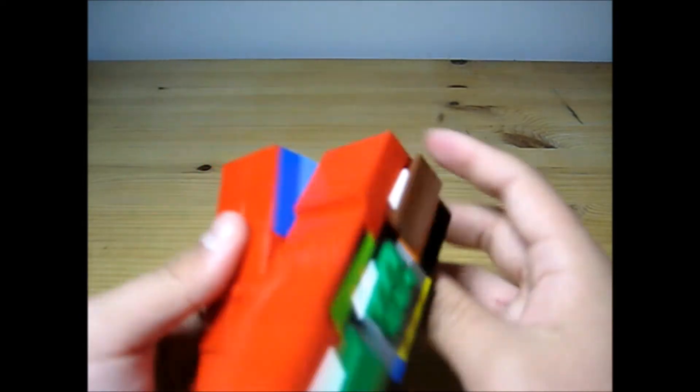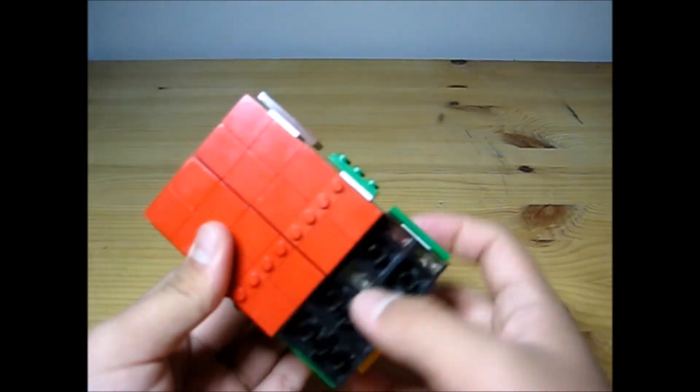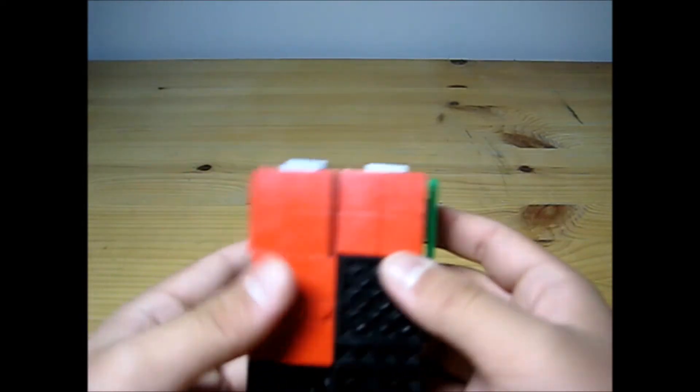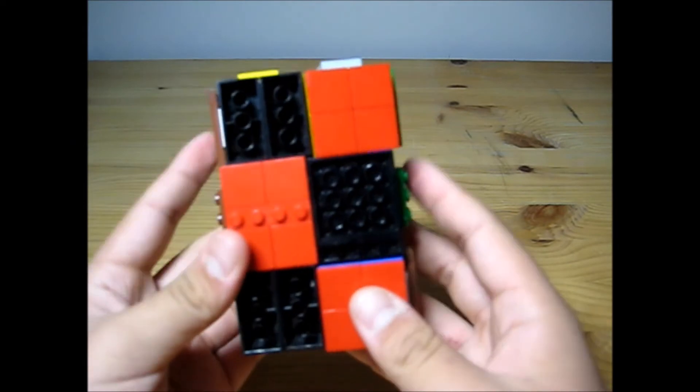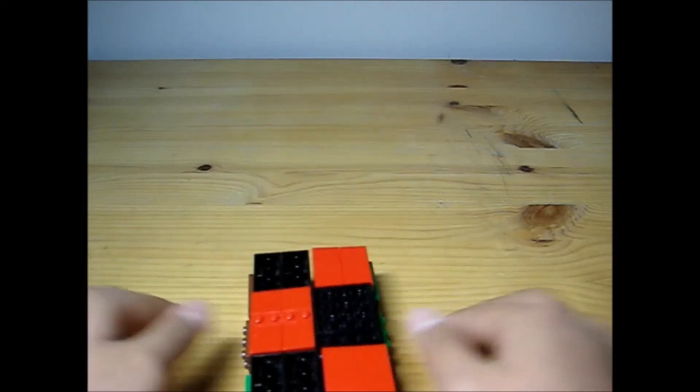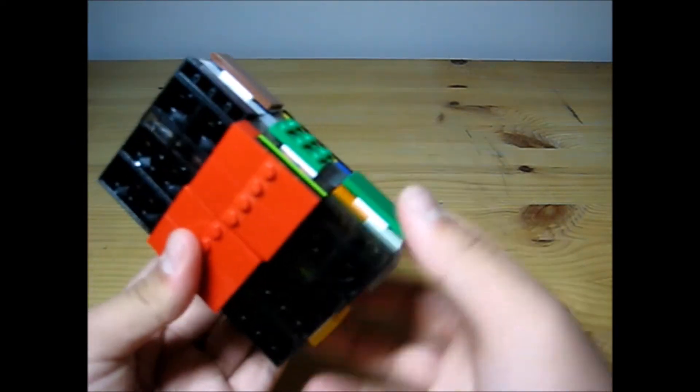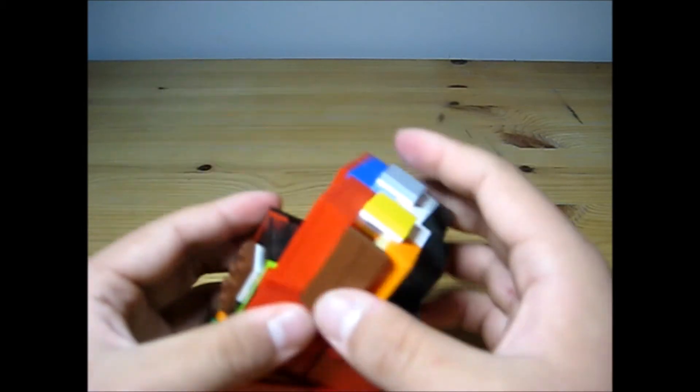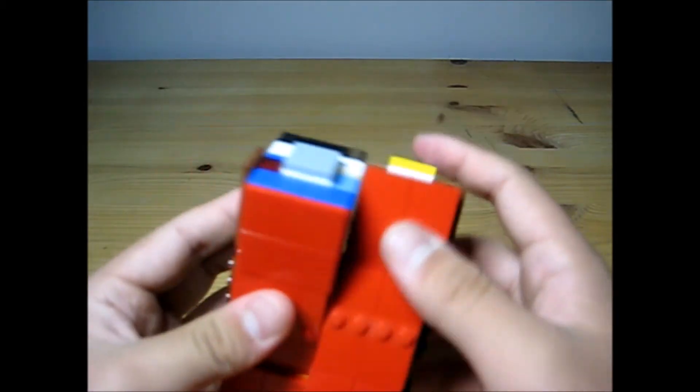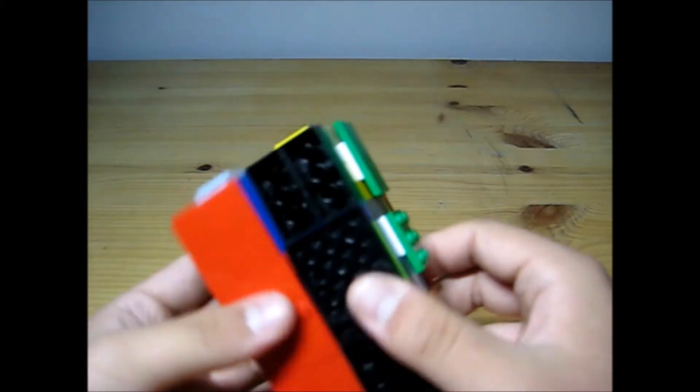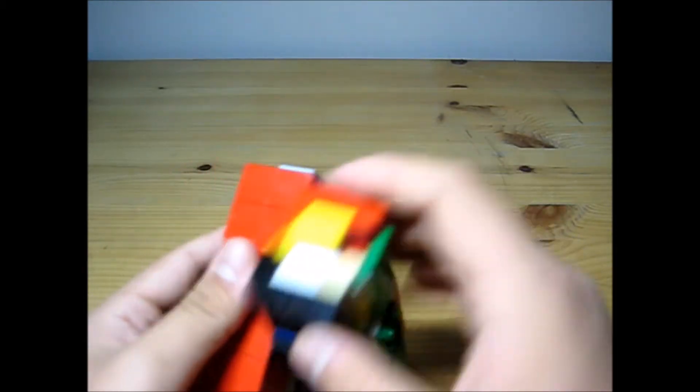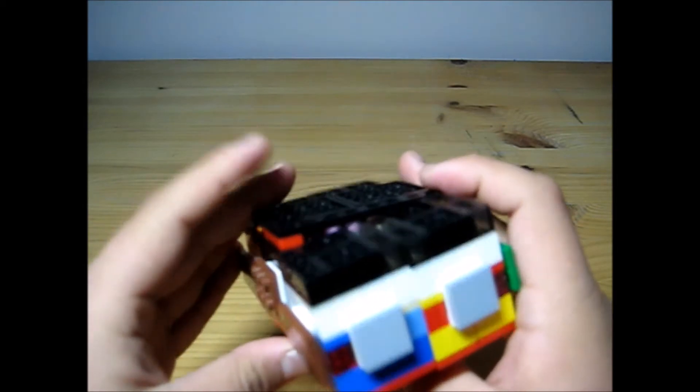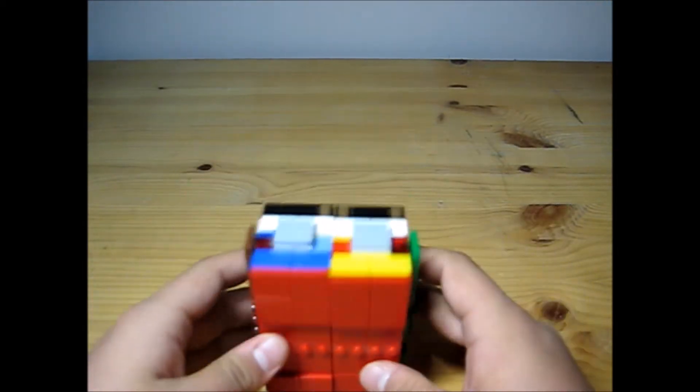Now I'm going to show you a few solves and you can determine how well the puzzle turns. Okay, three, two, one, go. And done! See, all the colors on each side are the same.